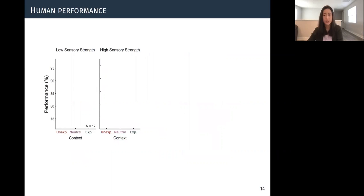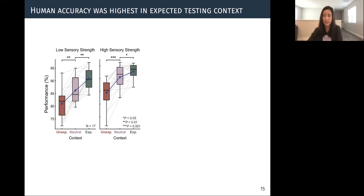So now on to the results, we will first look at the human performance. Here, we are plotting accuracy from each of the testing conditions, and at each sensory strength condition. So for human, we found that accuracy was higher in the expected context than in the neutral and unexpected context, in both low and high flicker frequency condition. And accuracy was also higher on trials where high compared to low sensory strength was being presented.